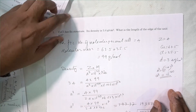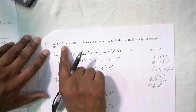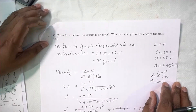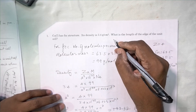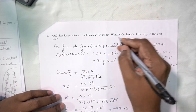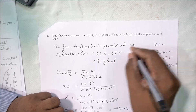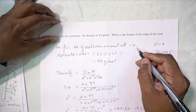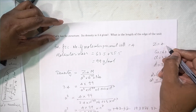Now let's solve a problem on this. CuCl, cuprous chloride, has an FCC structure — face-centered cubic crystal. Its density is 3.4 grams per cm cubed. What is the length of the edge of the cell? For FCC, number of molecules per unit cell is 4, so Z is equal to 4.